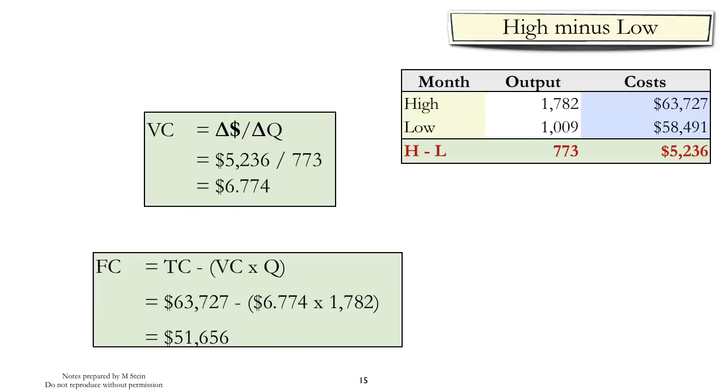Next, we take the total cost equation, rearrange it to isolate fixed costs, and then substitute in the data for either the high or the low point, as well as the variable costs we estimated before, to calculate the fixed costs.